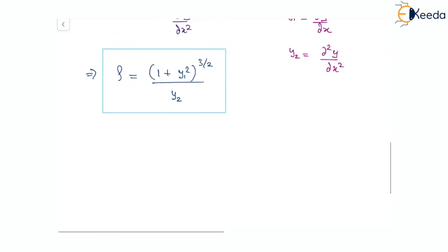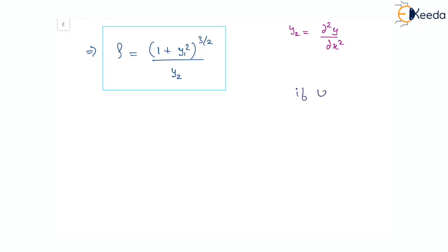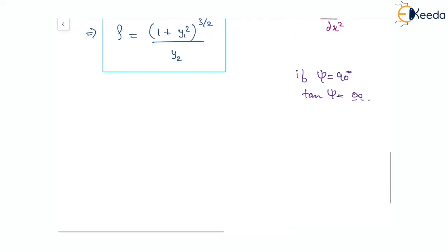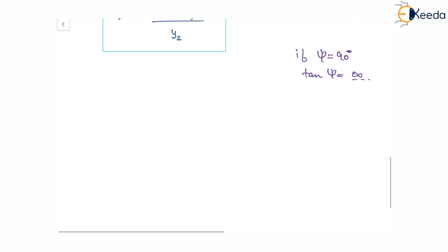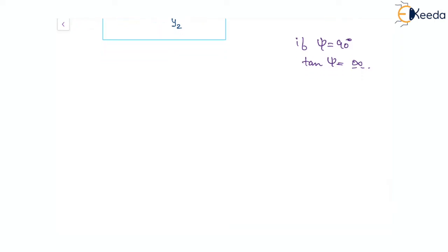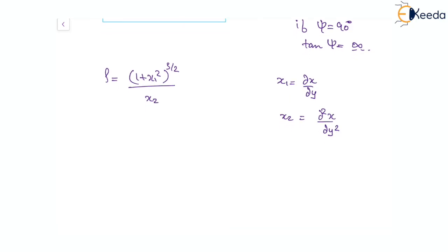Also, since tan ψ is dy/dx, what if ψ becomes 90°? If ψ is 90°, tan ψ will not be defined — it is going to be infinity. So in that case using this expression will not be possible, and as a replacement we can use: ρ = (1 + x₁²)^(3/2) divided by x₂, where x₁ means the first derivative of x with respect to y and x₂ means the second derivative of x with respect to y. This will be the alternative if ψ is making 90°, that is, when the slope of the tangent is infinity.